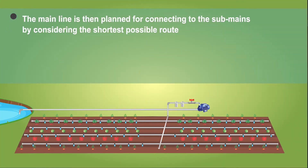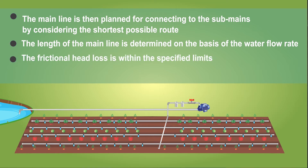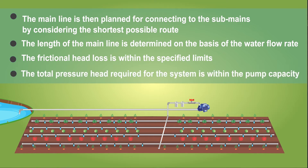The main line is then planned for connecting to the sub-mains by considering the shortest possible route. The length of the main line is determined on the basis of the water flow rate so that the frictional head loss is within the specified limits and the total pressure head required for the system is within the pump capacity.